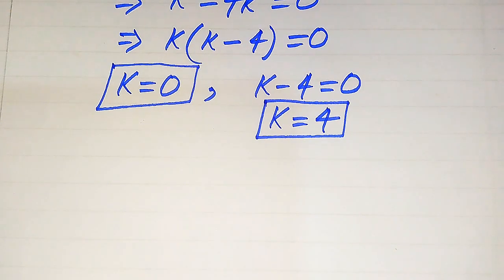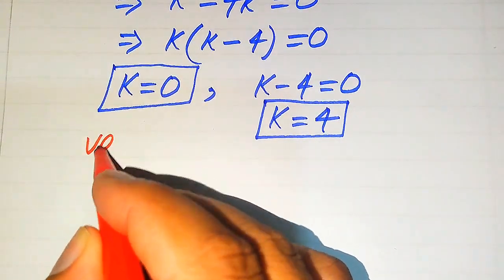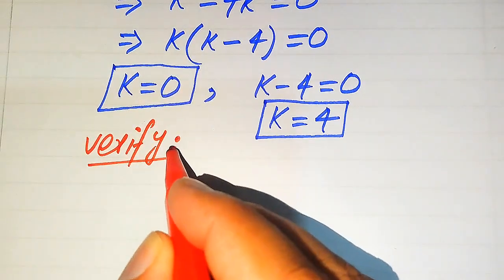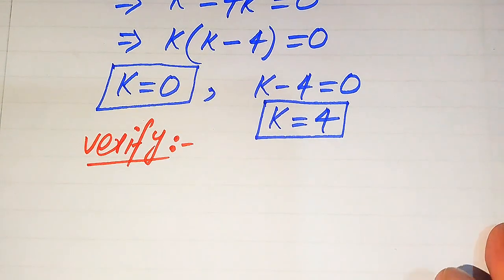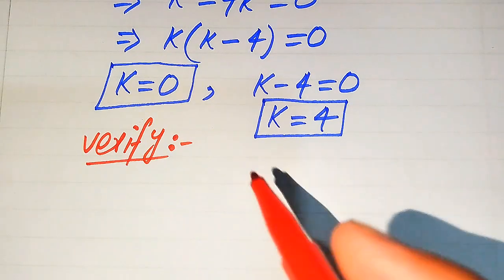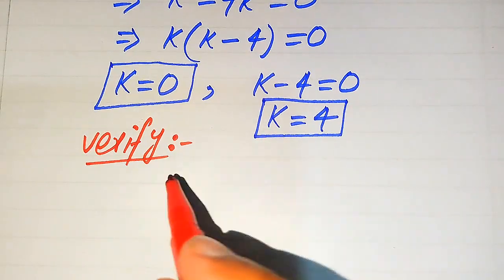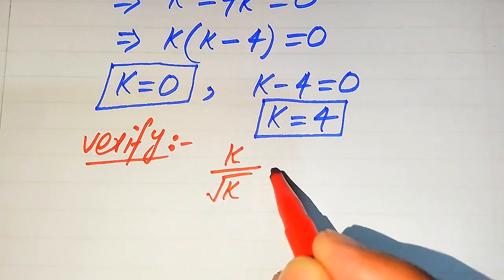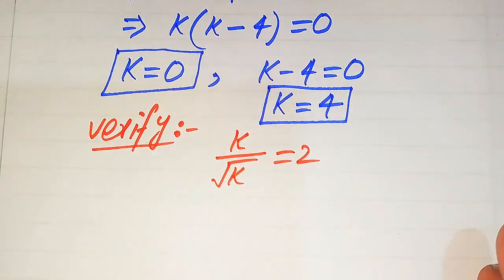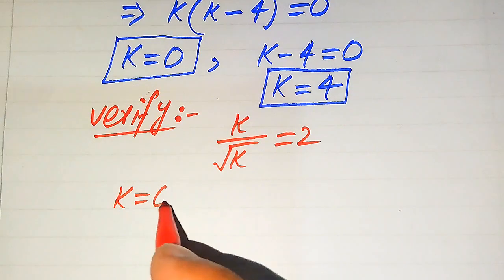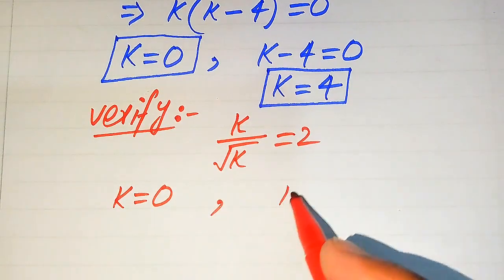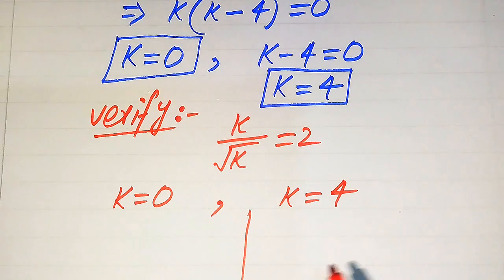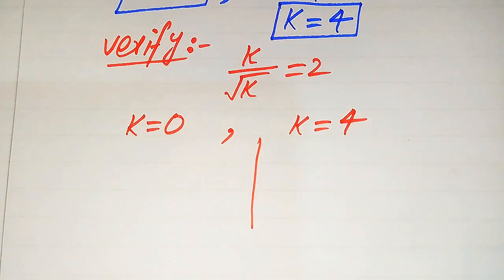Now we need to verify whether these roots are actual solutions or extraneous roots. We copy down the given equation k divided by square root of k equals 2. On one side we will verify k equals 0, and on the other side we will verify k equals 4.